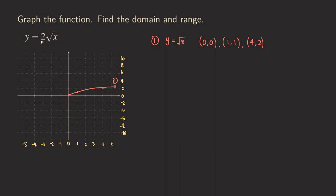In this one, as you can see, there is a 2 in front of our square root function, and I already have the parent function for the square root. What does the 2 do to that parent function? It is going to multiply all the y-values by 2, so as we plug in the same x-values, our y-values will be doubled. That means we are going to have a vertical stretch of the graph.